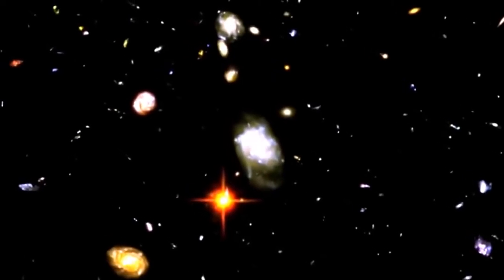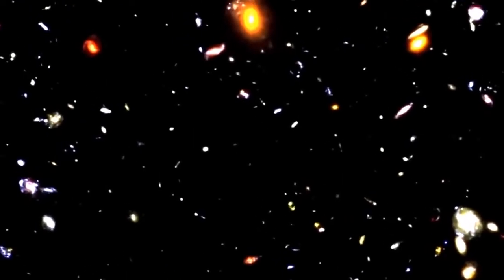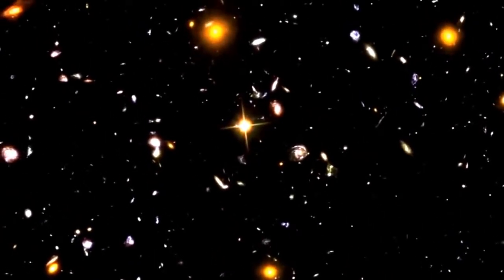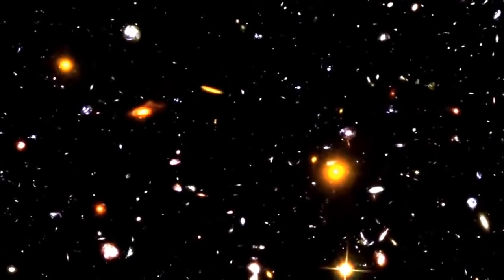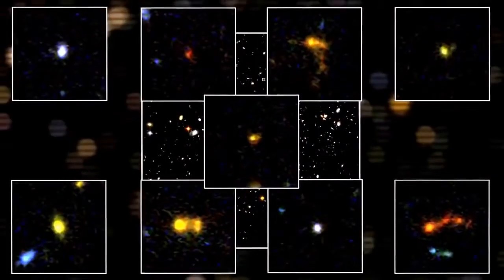What drew astronomers' attention were the tiniest galaxies, covering only a few pixels on Hubble's detector. Most of them do not have the grand spiral or elliptical shapes of large galaxies we see close to us today. Instead, they are irregular, scrappy collections of stars.